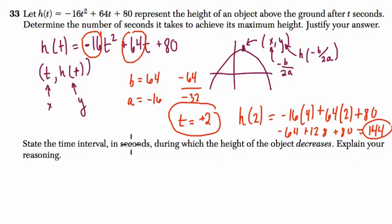So that's how we do it algebraically, and then they want to know during which time interval in seconds is the height decreasing. So after the maximum, if you know this is the maximum, anything after, it's going to be decreasing. So it's any time where t is not greater than or equal to 2, but greater than 2.